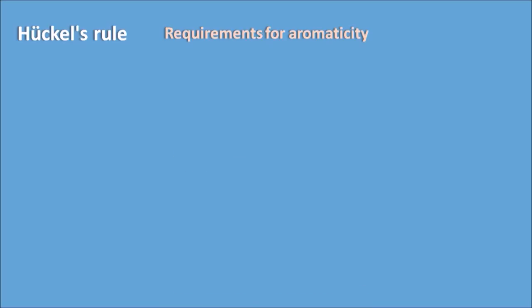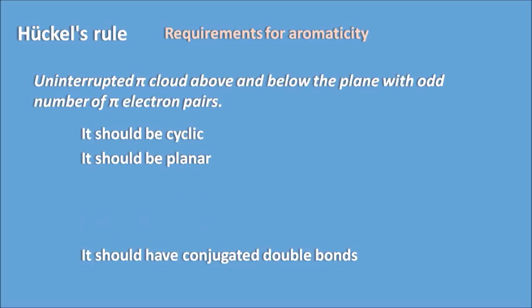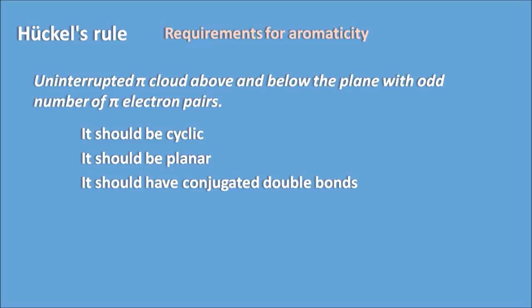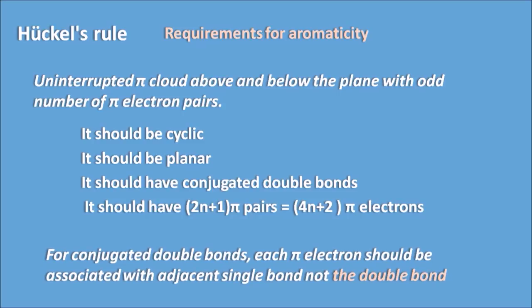Hückel's rule gives the requirements for aromaticity. We can define it as an uninterrupted pi cloud above and below the plane with an odd number of pi electron pairs — that is, a continuous pi cloud with 2n+1 pi electron pairs, or equivalently 4n+2 pi electrons. The compound must be cyclic, planar, and have conjugated double bonds providing the uninterrupted pi cloud.